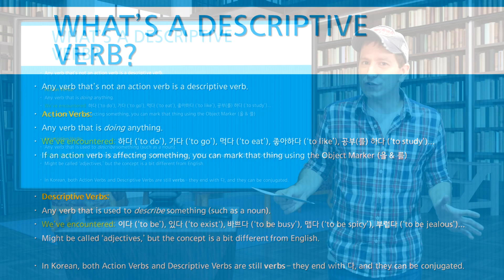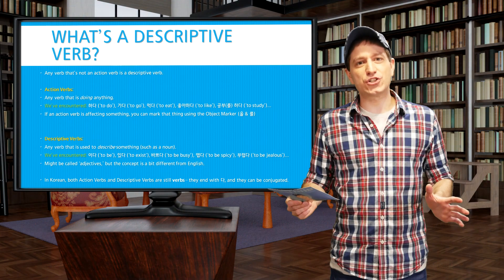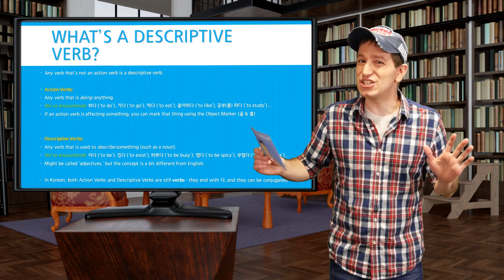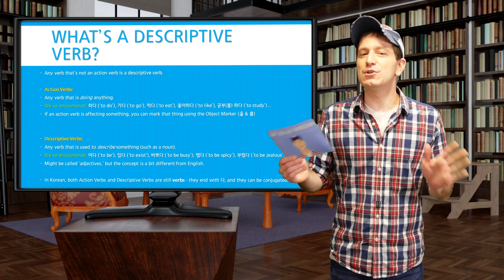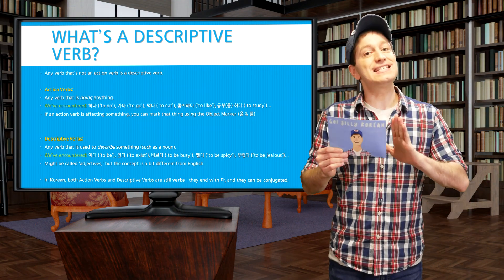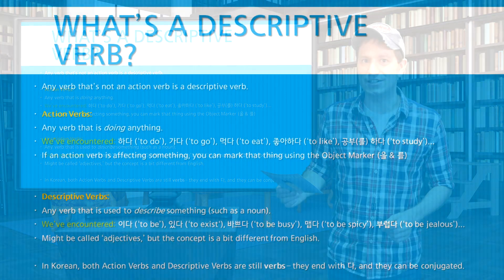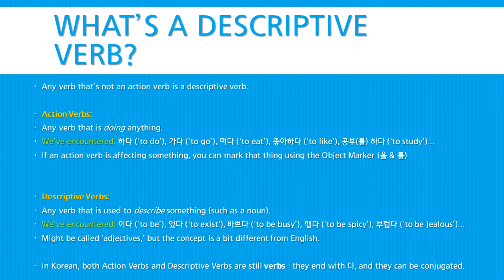If you're comfortable with language terminology, you might be tempted to call these adjectives, but the way they work is different than adjectives in English. In Korean, you should note that both action verbs and descriptive verbs are still verbs — they end with 다, and they can both be conjugated.